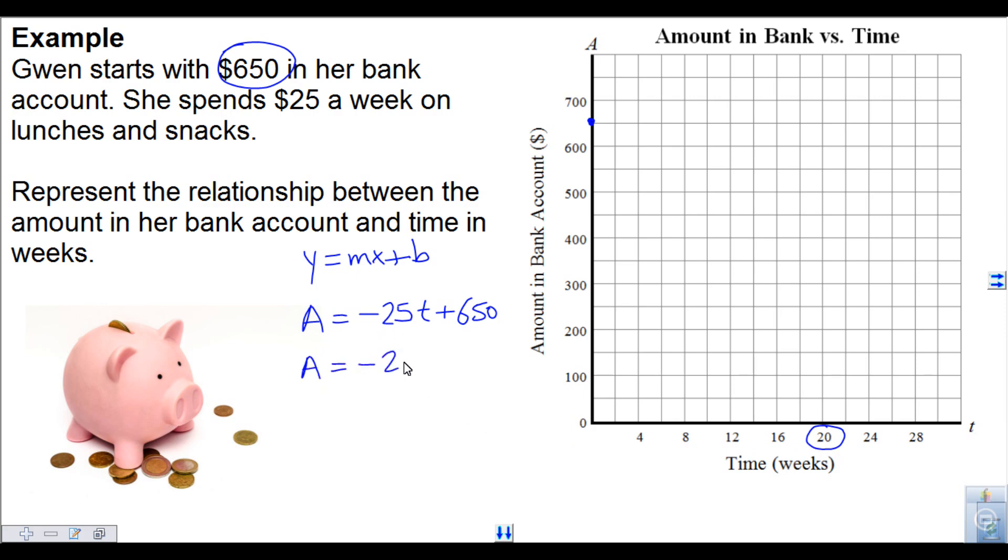So negative 25 times 20 plus $650 equals—that is negative 500 plus $650—so that'll be $150. So at 20 weeks she will have $150 left. So I've got two dots. I go ahead and I create a straight line graph. And that's how it's done.